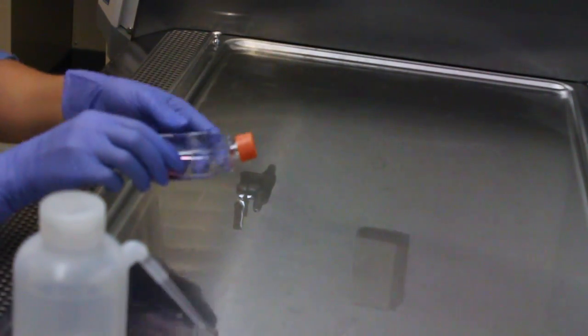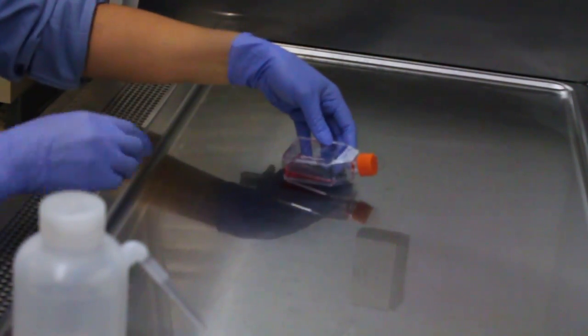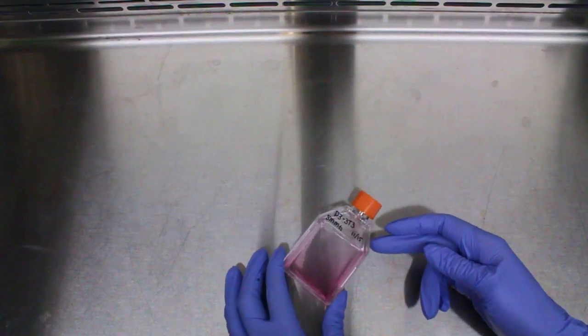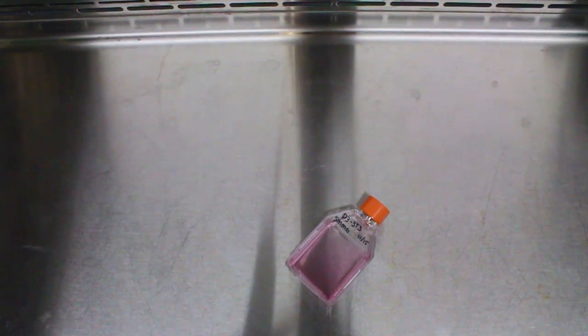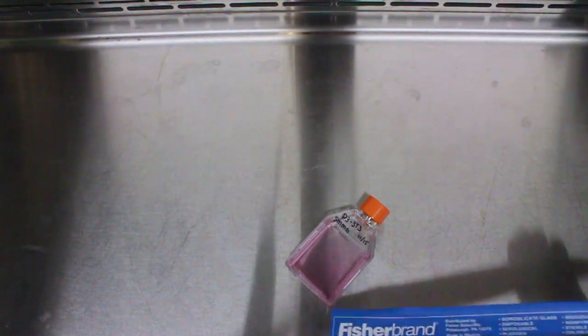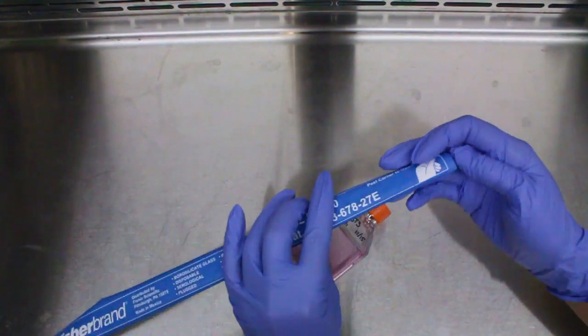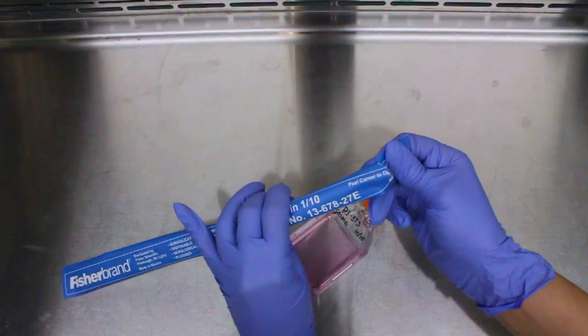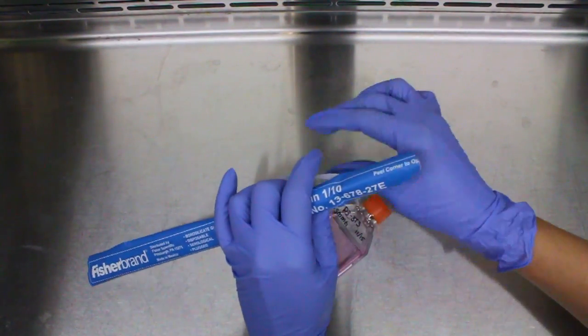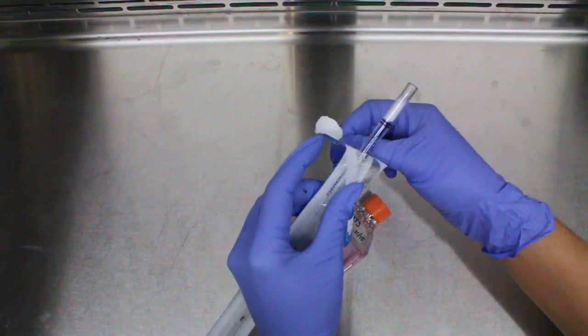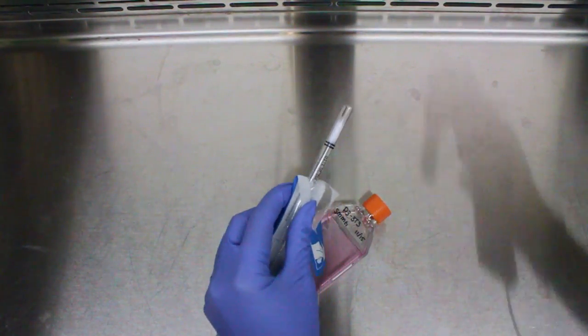Now bring in your cells that you just removed from the incubator. Open a sterile serological pipette by peeling back the paper like you would a banana. Be sure not to touch any part of the pipette.